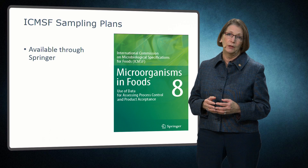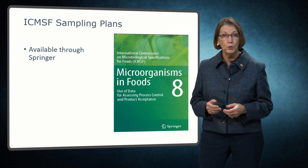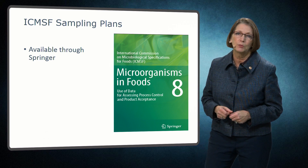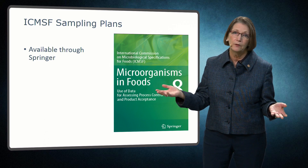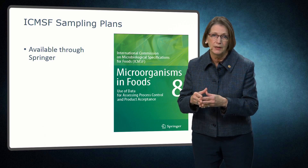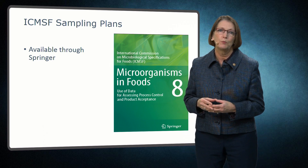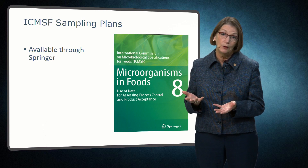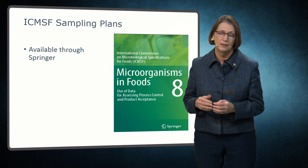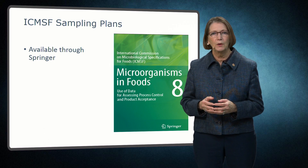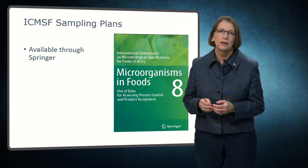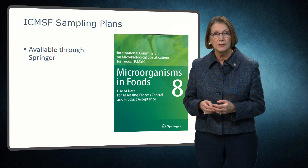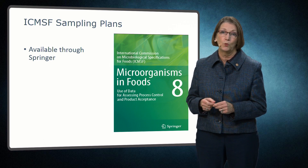Examples of within-lot sampling plans do exist for certain food products. The ICMSF book, Microorganisms and Foods 8, has recommended sampling plans for a wide variety of food products. These represent within-lot testing recommendations when production conditions and history are not known, such as for incoming ingredients or port of entry inspections. This book also recommends between-lot testing and suggests that the within-lot sampling plans would apply when in-process or other testing indicates a potential for contamination.